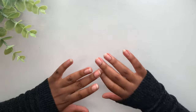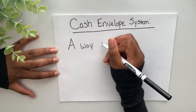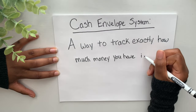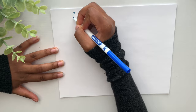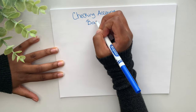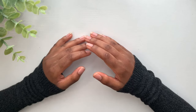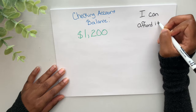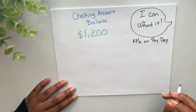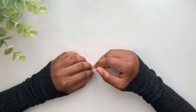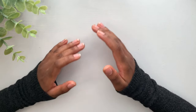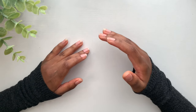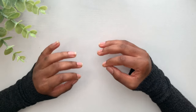Let's go ahead and define what the cash envelope system means. To me, it's just a way to track exactly how much money you have left in each budget category. When I discovered this I knew it was just what I needed, because when I looked at my account online I could not differentiate between money that went to gas, money that went to rent, or money that went to groceries.